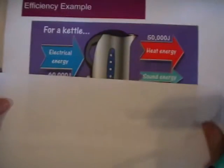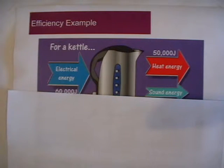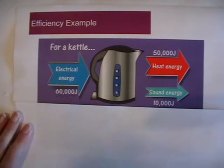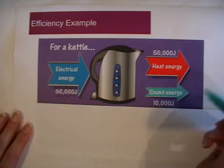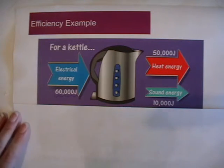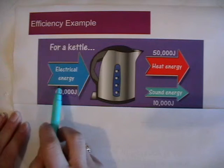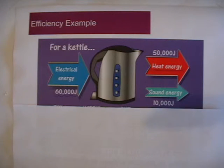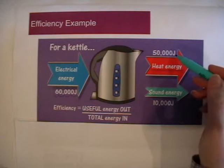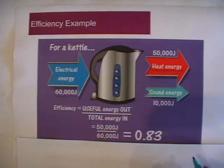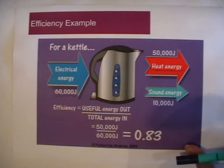Now let's look at some examples. In this question, the input energy is 60,000 joules — that is the total input energy. We are getting 50,000 joules of heat energy out and 10,000 joules of sound energy. For a kettle, the intended energy transfer is from electrical energy to heat energy, as we are boiling water. So: efficiency = useful energy out over total energy in = 50,000 joules divided by 60,000 joules, which gives an efficiency of 0.83. Remember, there are no units for efficiency.